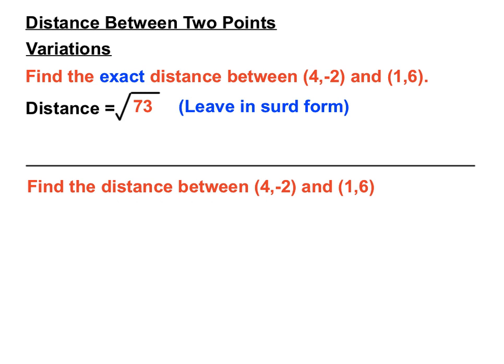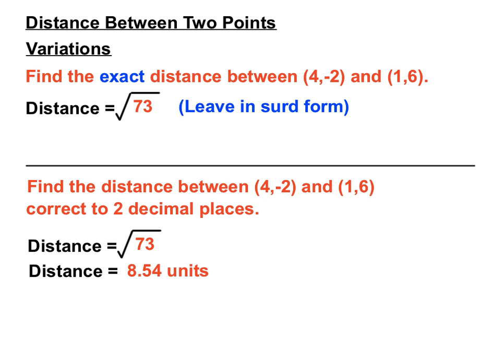Another variation is they can also use those same values and get square root of 73 for our answer. But if they indicate they want it correct to two decimal places, that really is a strong indication that they want you to put that into your calculator and get an answer for it, a decimal answer for it, and to round that off carefully. So if you round that off carefully, square root of 73 on your calculator will end up giving you 8.54 units if you round it off to two decimal places.